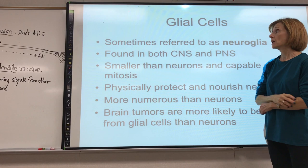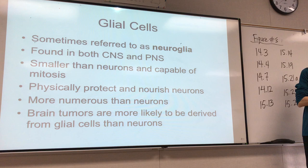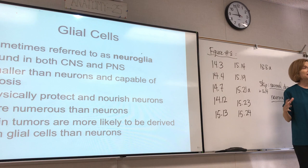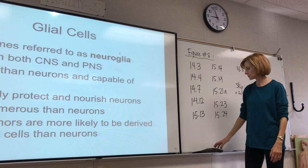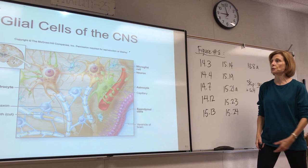You can just say glia, either is fine. These are kind of supportive cells in a way. They surround neurons. They actually outnumber neurons by roughly about 50 to 1, and they are much smaller than neurons. These cells can divide by mitosis; they do divide throughout our lifetime. So when people have brain tumors, they are usually tumors of neuroglial cells, not neurons. We'll talk about the types found in the CNS and the two types found in the PNS.